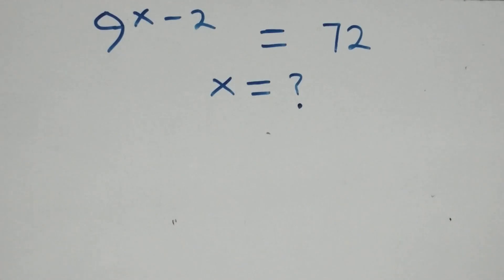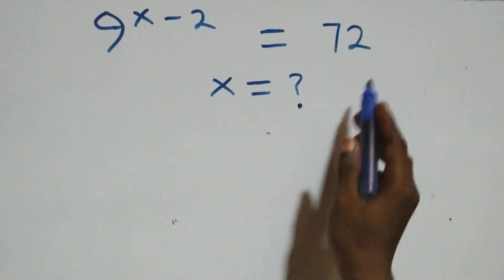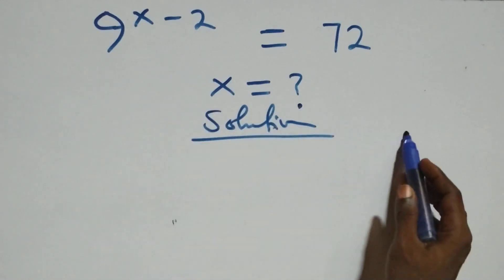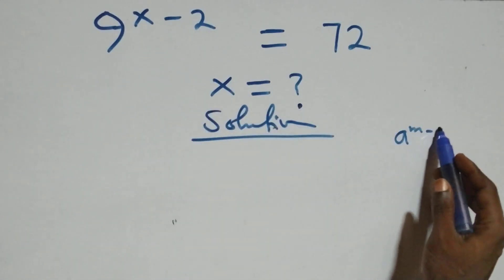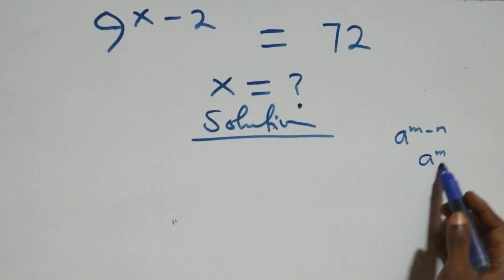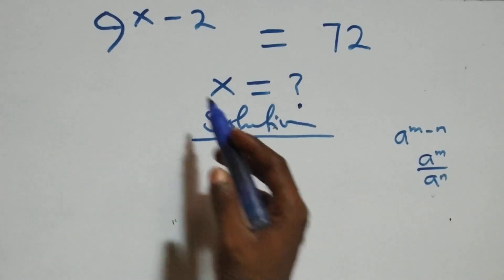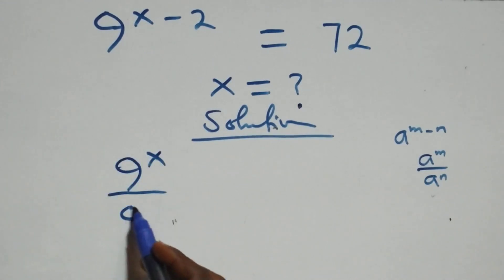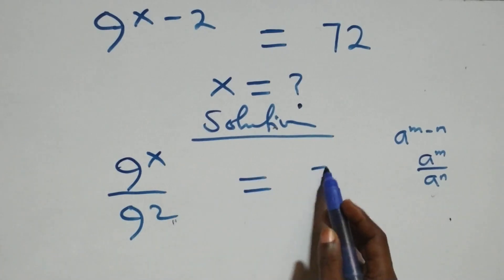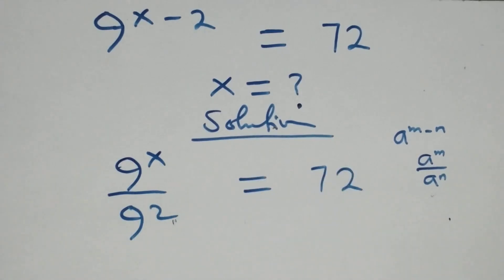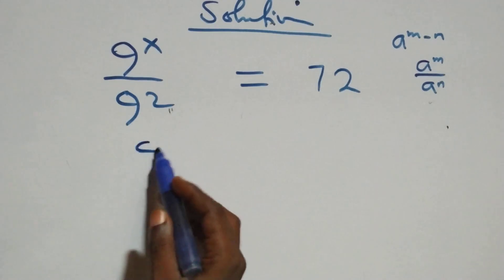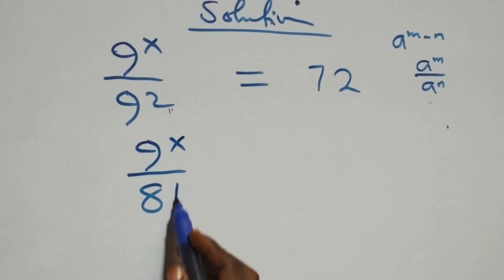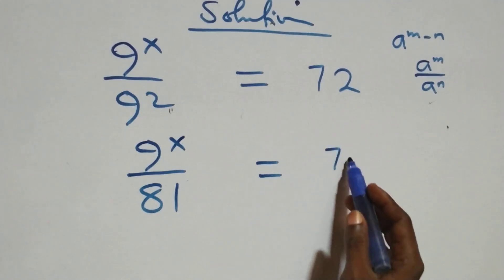Welcome, let's solve this exponential equation. We have the rule: a raised to power m minus n equals a raised to power m over a raised to power n. For this problem, we have a raised to power x over nine squared equals 72. This is the same as nine raised to power x over nine squared, where nine squared is nine times nine which is 81, equals 72 over one.